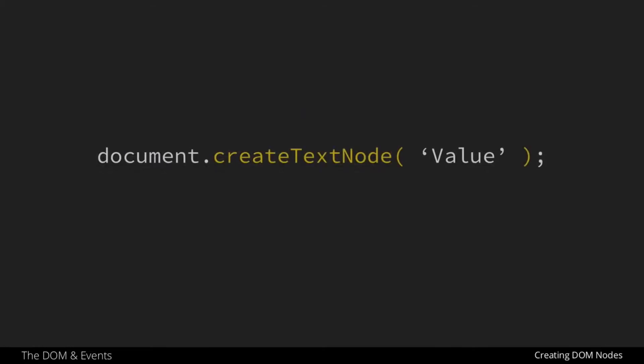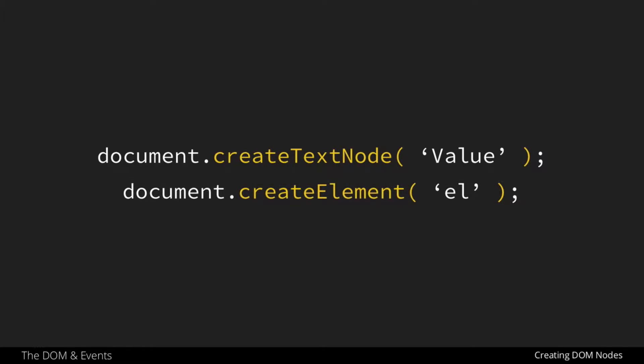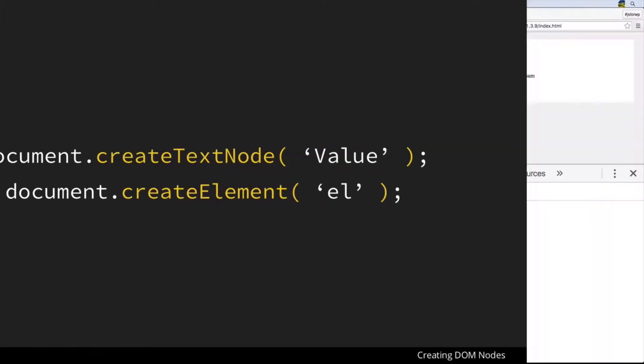We have at our disposal two helpful functions to begin creating these two types of elements. The first is createTextNode, where we simply pass in the value that we want to have as this new text node. Then we have createElement, where we pass in as a parameter the type of element we want to create. Let's go ahead now and look at some examples of this in code.